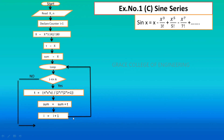When the loop condition becomes false, the program moves to the next step: print the sum. Then stop the program. This is the flowchart for the sin series.